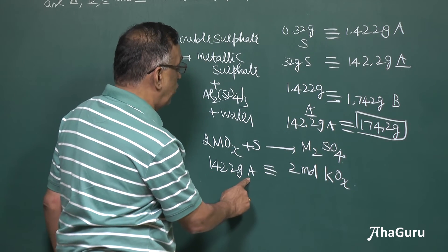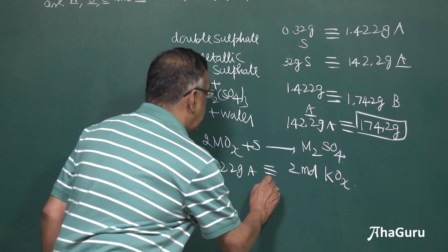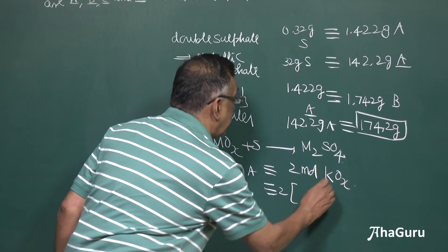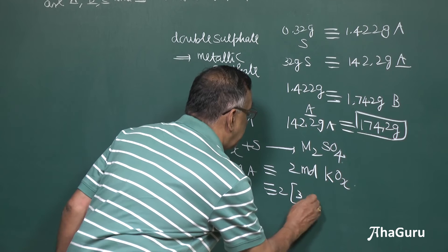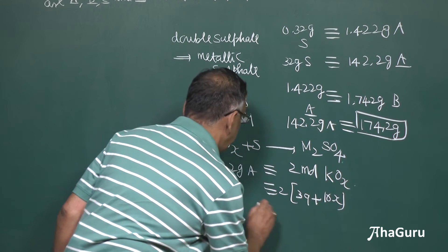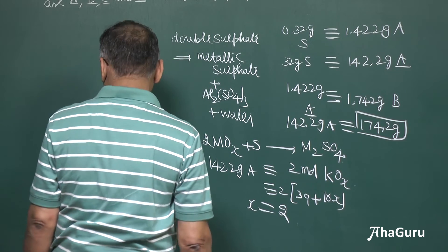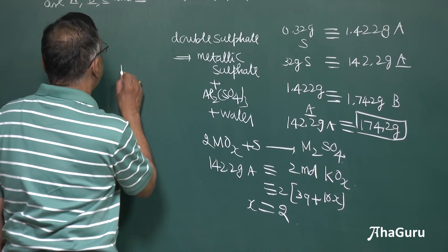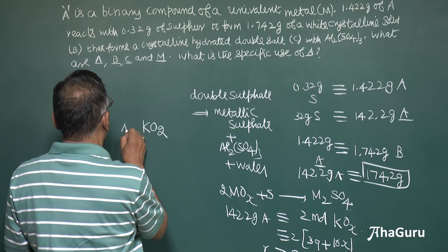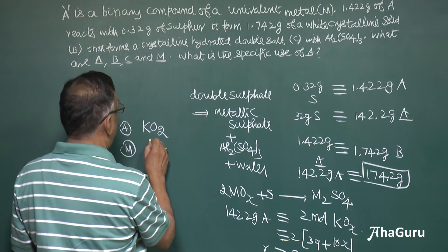142.2 grams of A corresponds to 2 moles of KOₓ. So: 2 × (39 + 16x) = 142.2. Solving this gives x = 2, which means the compound must be KO₂ — potassium superoxide. The original compound A must be KO₂ and the metal must be potassium.